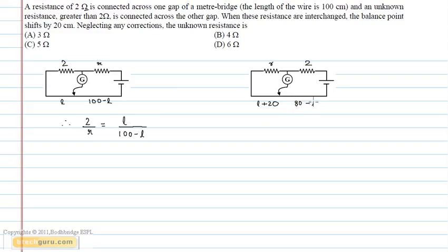As in this case a balanced Wheatstone bridge is obtained, the ratio of the resistors is equal to the ratio of the lengths across them. Therefore, R upon 2 is equal to L plus 20 upon 80-L.